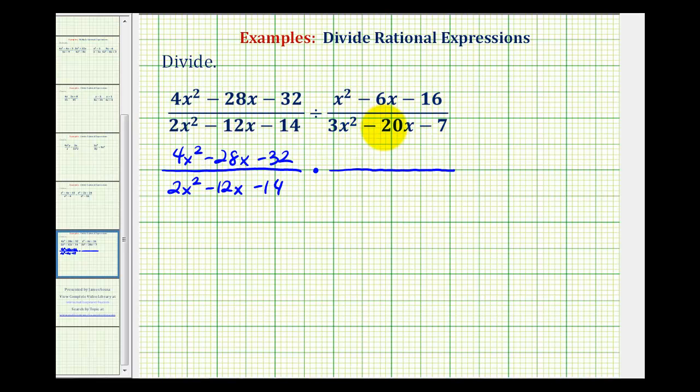And now for the reciprocal of our divisor, the numerator is going to be 3x squared minus 20x minus 7, and the denominator is going to be x squared minus 6x minus 16. So to determine the reciprocal of the fraction, you could think of just flipping the fraction over.